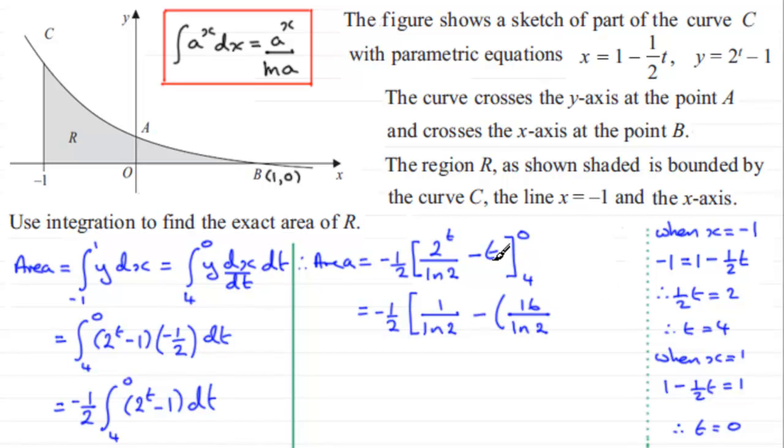Okay, what we've got now: we've got minus a half, and then we've got minus one over the natural log of two minus sixteen over the natural log of two. Well, that's going to be minus fifteen over the natural log of two. And then we've got minus minus four, so that's plus four.